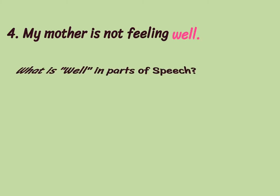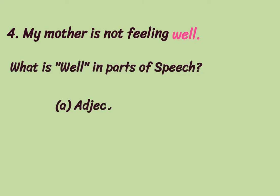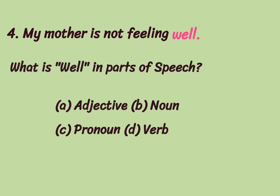The fourth question is 'My mother is not feeling well.' What is 'well' in parts of speech? Well is actually an adjective. For example, if we used 'ill' instead of 'well,' ill would also be an adjective. These adjectives cannot be placed in front of a noun in attributive position; they can only be placed in predicative position — that is, after a helping verb, auxiliary verb, or linking verb. 'Feeling' is the linking verb here, and 'well' comes after it in predicative position. So 'well' is an adjective.